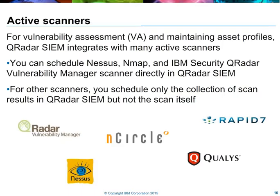Since the asset record contains vital information about operational systems observed in the environment, QRadar can incorporate data from third-party vulnerability scanners to further enhance the asset records. The information from vulnerability scans can also be used in the rules engine. For instance, if we observe traffic going to an HTTP port on a particular server and there's an associated vulnerability, the overall scoring of the event may go up.